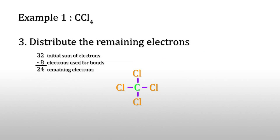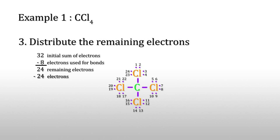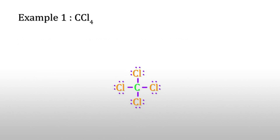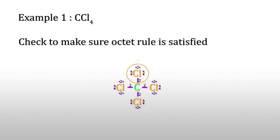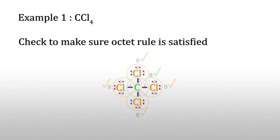The remaining electrons are 24. Now distribute the remaining electrons. In this way we distribute all 24. Check to make sure the octet rule is satisfied. All the chlorines satisfy the octet rule. What about carbon? It also satisfies the octet rule. So the Lewis structure of carbon tetrachloride looks like this.